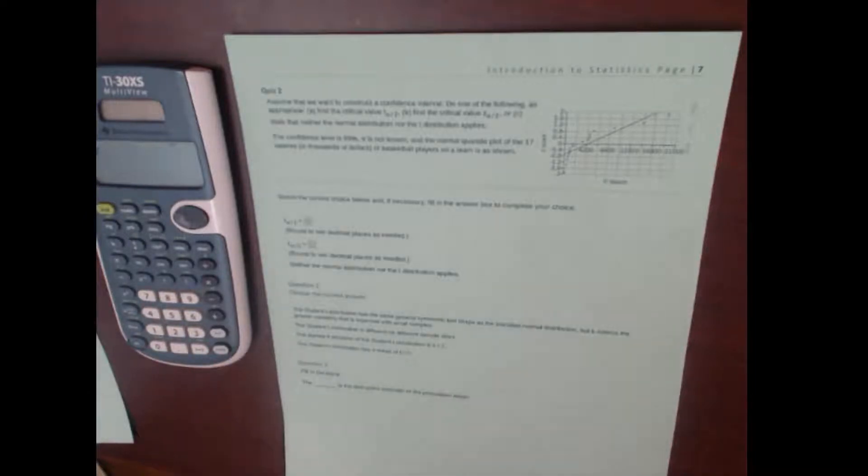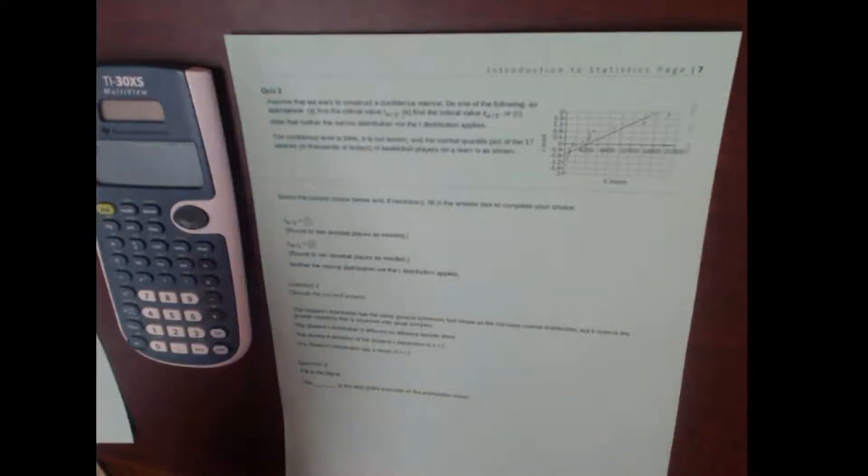And the reason that you can do 30 or more and have it not be normal is because of something awesome called the central limit theorem that I'll probably talk about later. But in any case...